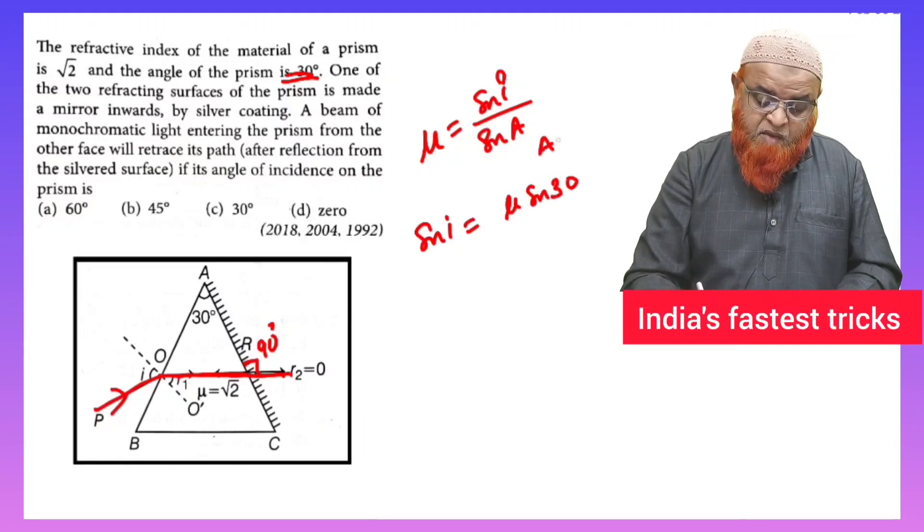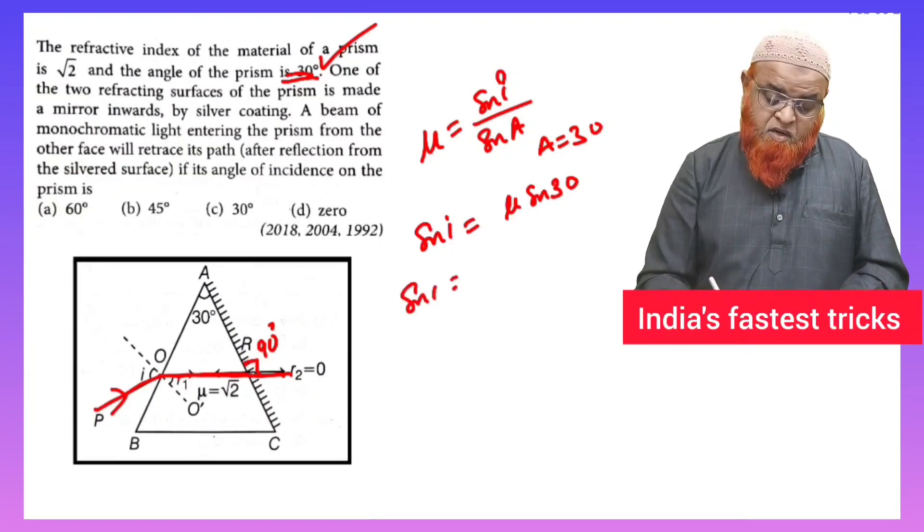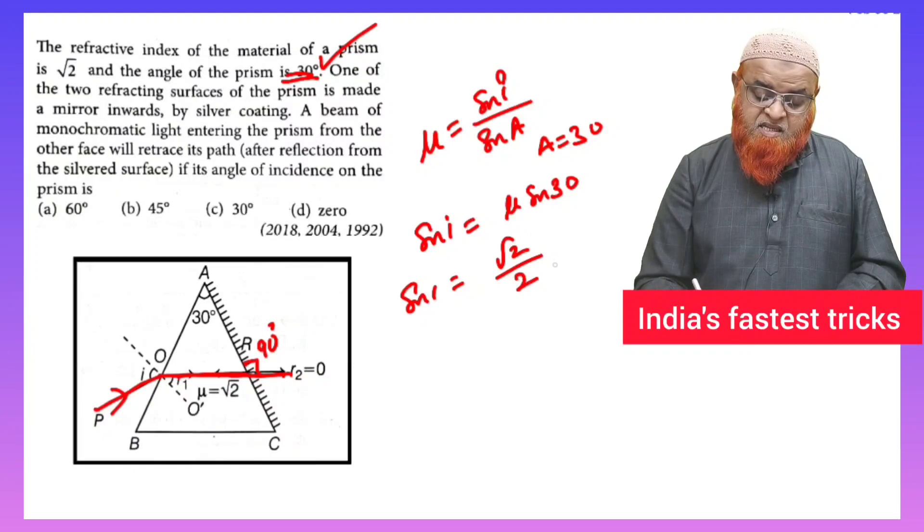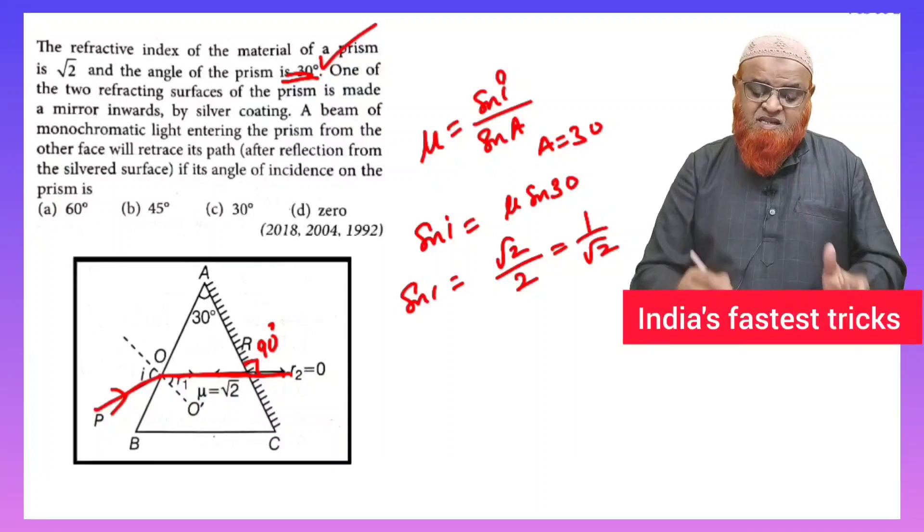A is taken as 30 because A is given as 30 in the problem here. So therefore, sin i is equal to μ, which is √2, and sin 30 is nothing but 1/2. So which is nothing but 1/√2. That's it, you got the formula in a single step method.